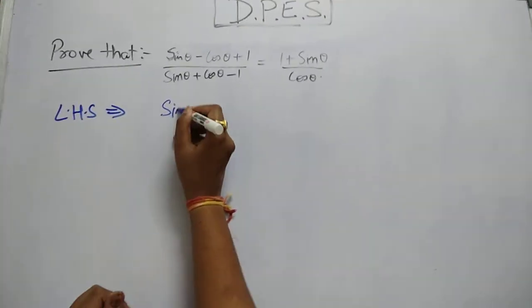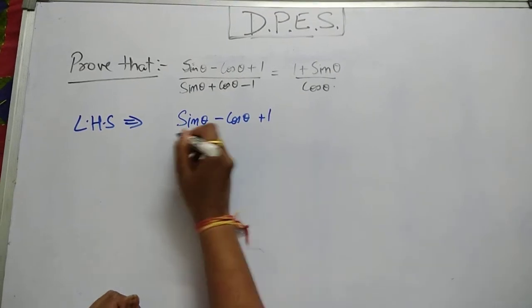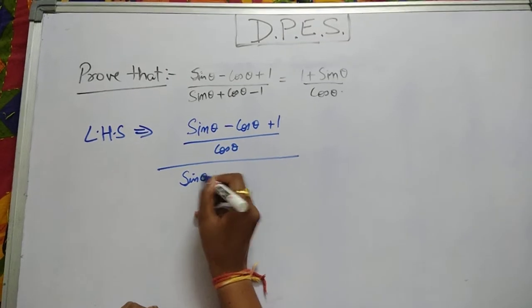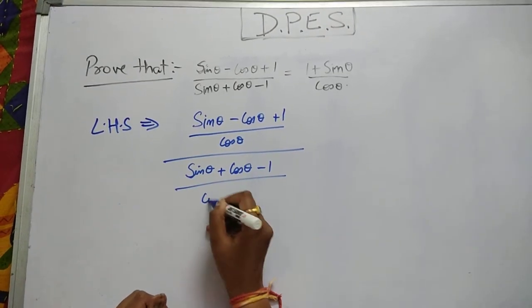So we will do sin theta minus cos theta plus 1 upon cos theta whole upon sin theta plus cos theta minus 1 upon cos theta.